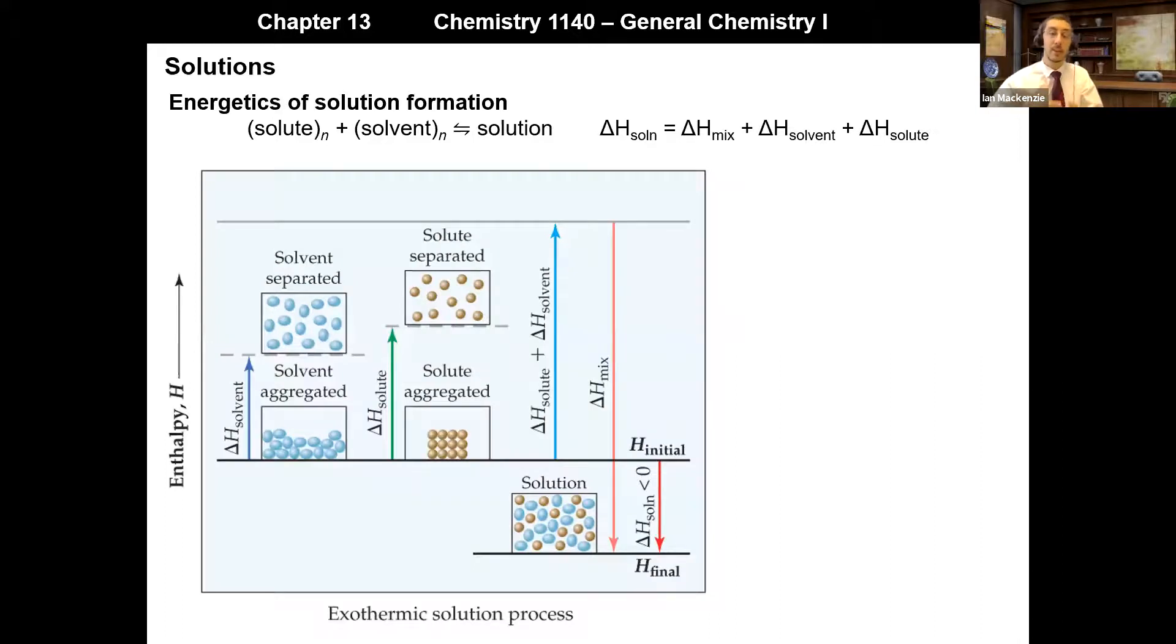Well, let's take a look at the exothermic process first. We were already told that delta H for solvent, breaking the solvent interactions, and that's kind of illustrated here in this cartoon diagram, that must be a positive value because we're disrupting intermolecular attractions. And disrupting the solute is also an endothermic process. This must take energy. So the sum of those two is some particular energy here.